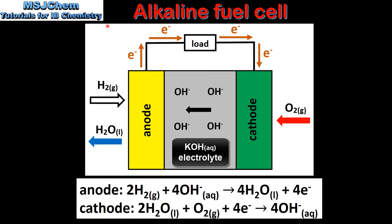Next we look at an alkaline fuel cell. In an alkaline fuel cell hydrogen gas is oxidized at the anode and oxygen gas is reduced at the cathode. The product water is produced at the anode rather than the cathode. The hydroxide ions move from the cathode to the anode in the electrolyte. At the anode they react with hydrogen gas to form water and electrons. The electrons flow through the external circuit from the anode to the cathode.